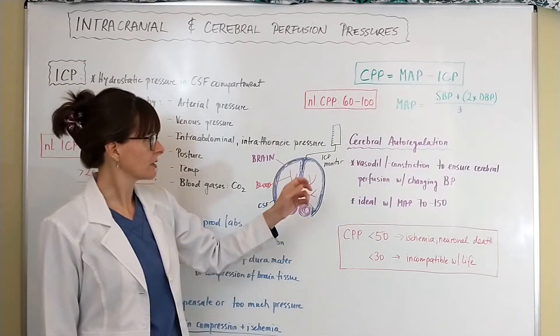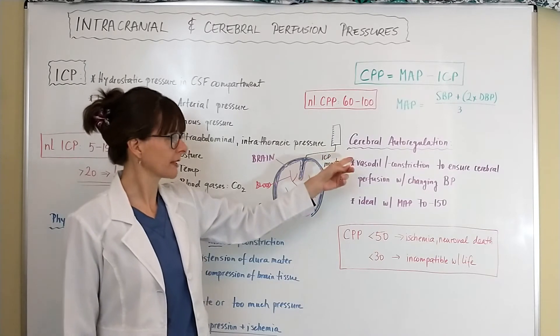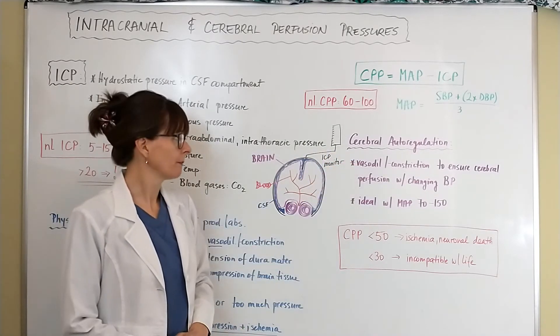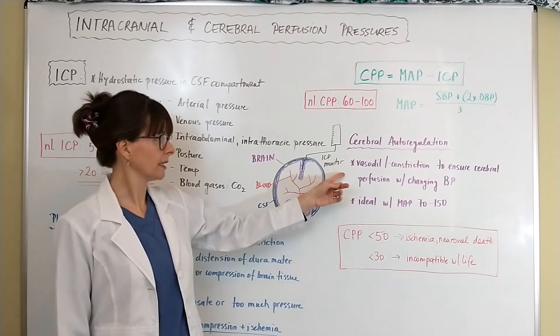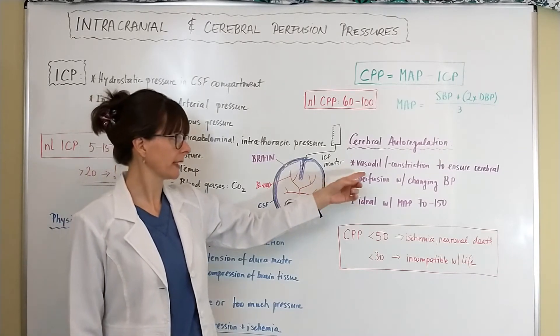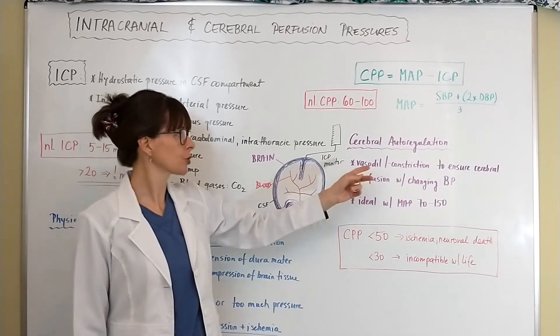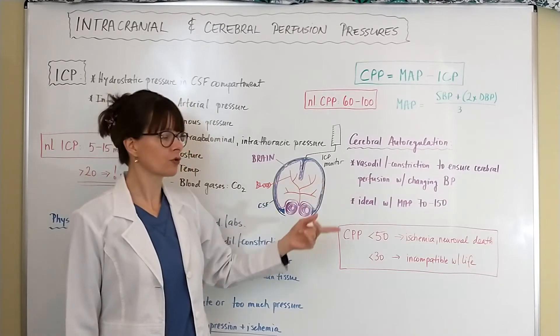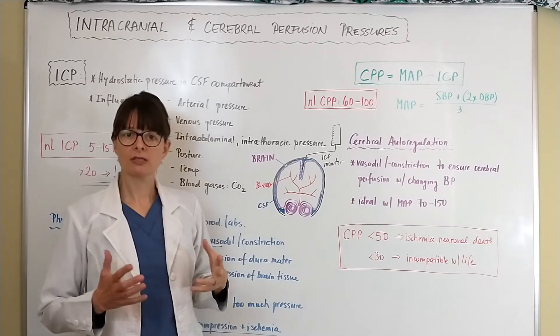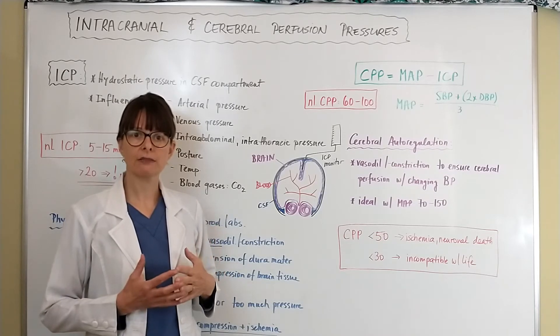Cerebral autoregulation is another mechanism that our bodies are equipped with, by basically again the ability to vasodilate and constrict to ensure cerebral perfusion with changing blood pressures, because depending on what's going on in our lives and our activity...